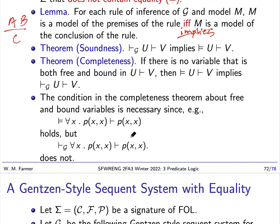So I want to illustrate why this happens. If we look at this formula, this is clearly valid because it says that for all x, P of x, x holds. It says that this holds will imply that P of x, x holds.